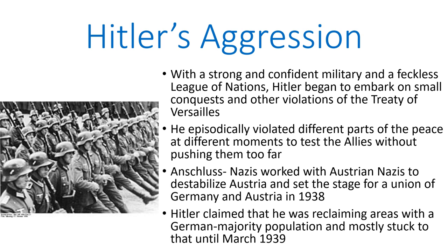At the same time that he was getting himself involved in Spanish politics, Adolf Hitler was growing increasingly aggressive closer to home as well. With a strong and confident military and a feckless and greatly weakened League of Nations — Italy and Japan had long since left the organization — Hitler began to embark on small conquests and other violations of the Treaty of Versailles. What he would do is episodically violate different parts of the peace at different moments to test the Allies without pushing them too far. He knew if he pushed them too hard too fast, they would declare war before he was ready. However, for the most part the Allies were aware of what Hitler was doing, at least to some extent, and they too would begin to rearm — albeit at a slower pace — during the late 1930s.